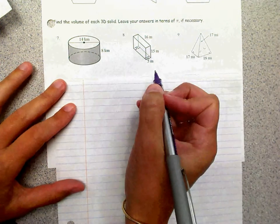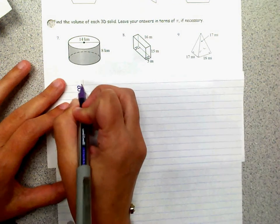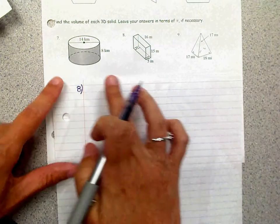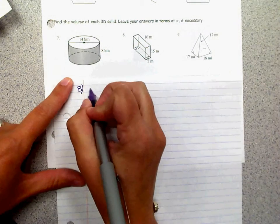Number eight. Number eight is a rectangular prism. So we have two different formulas that we could use to find the volume.